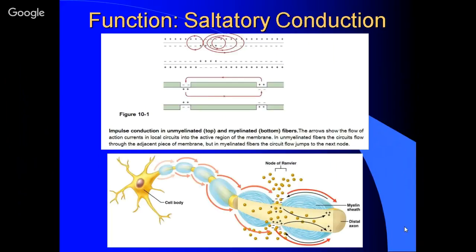Myelin's purpose is saltatory conduction, or stepwise conduction. The idea is well portrayed here in this cartoon: rather than depolarizing and repolarizing the entire axolemma — that is, the membrane of the axon — you insulate large segments at a time. You insulate large segments of the nerve, which could be up to a millimeter in length, and you leave only a small gap between these insulated sections. Therefore, all of the ion movement between the intra- and extracellular space occurs at these nodes of Ranvier instead of as a traveling wave.